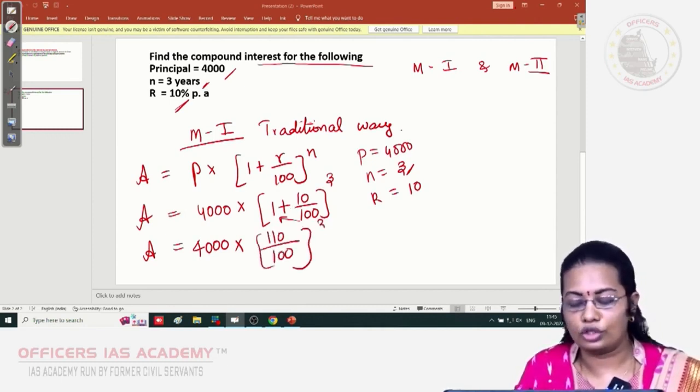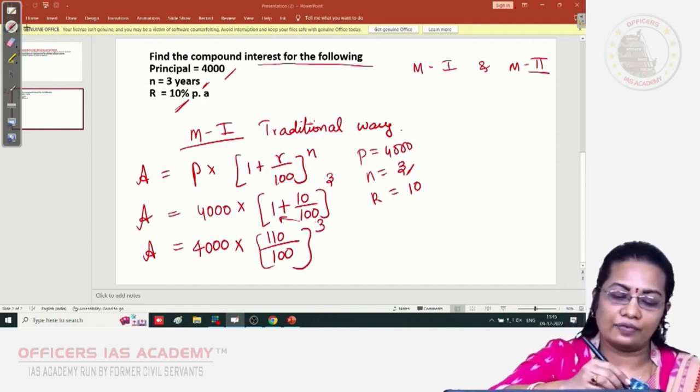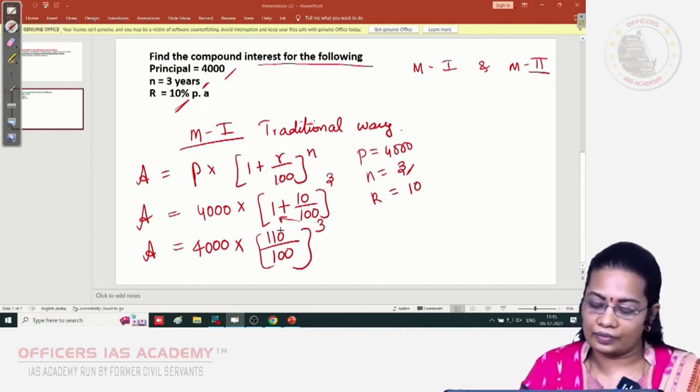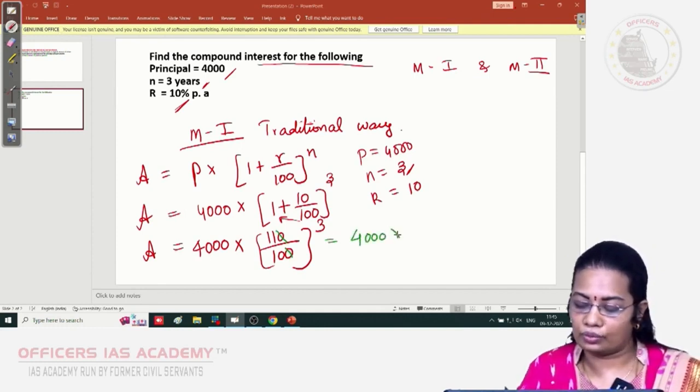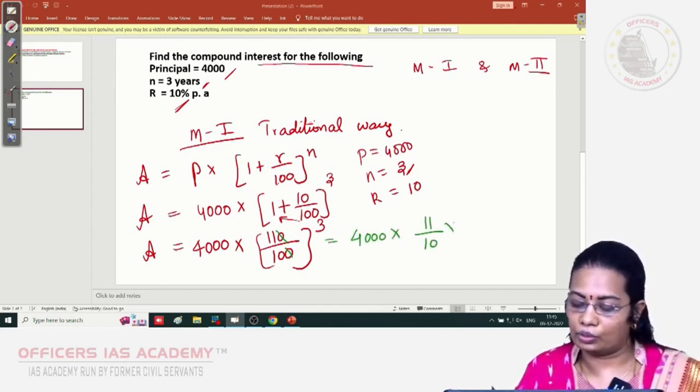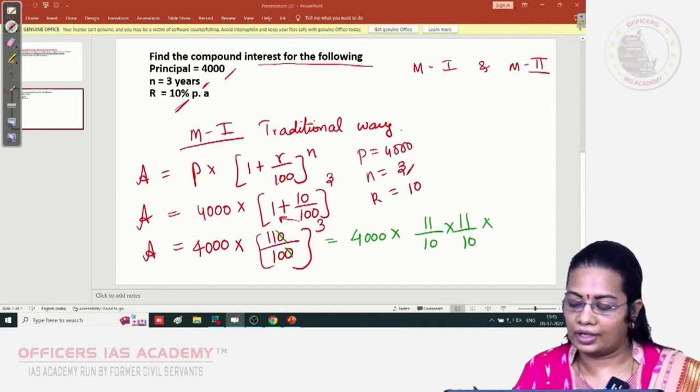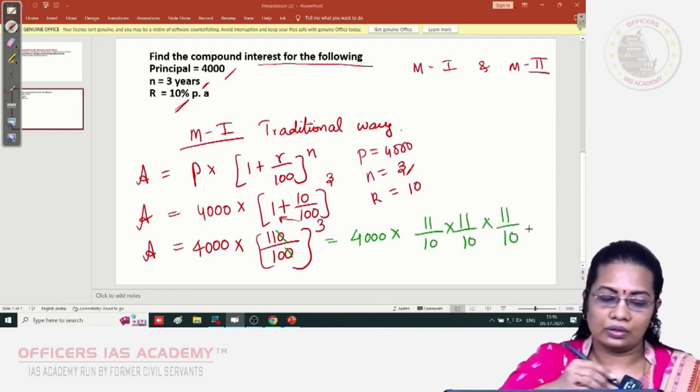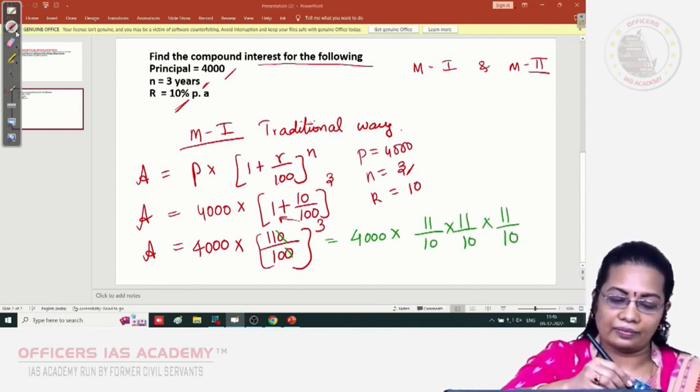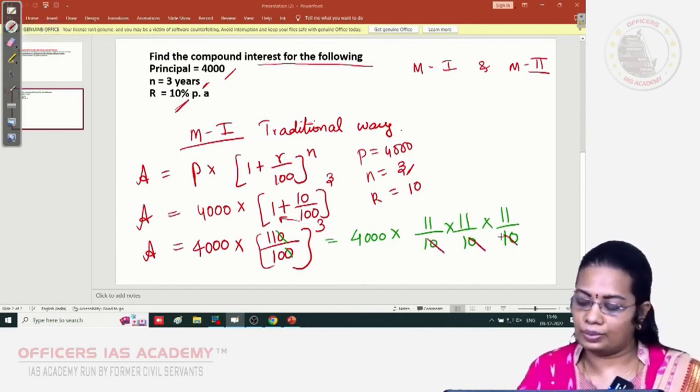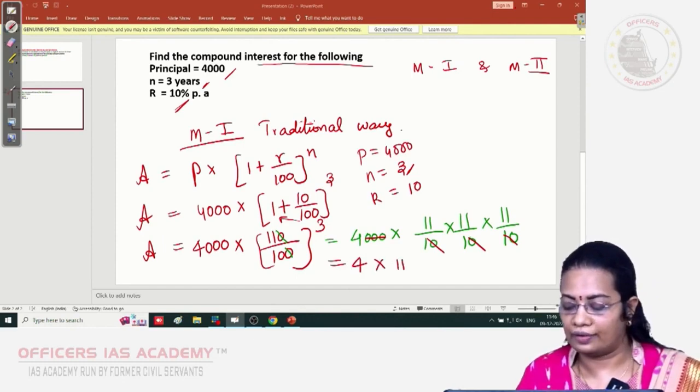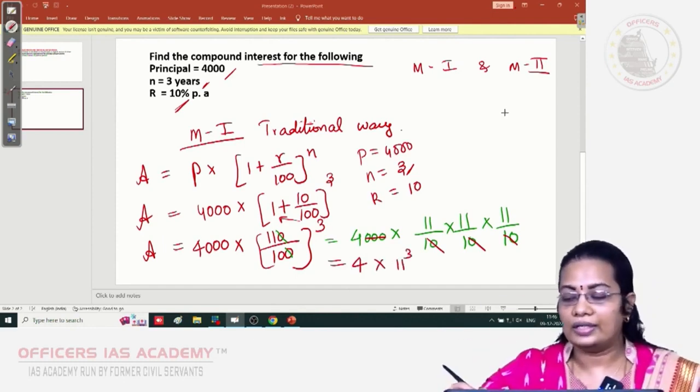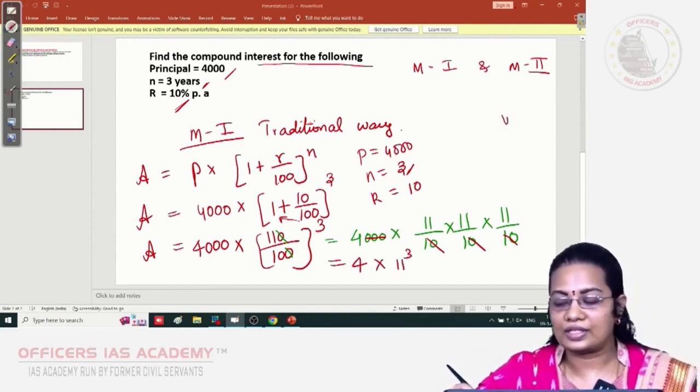Now you can cancel from this side. The zeros will get cancelled. Finally you will get 4,000 × 11/10 × 11/10 × 11/10. These three zeros will cut, so finally I will get 4 × 11³. In the beginning you want to memorize up to 15 cubes.